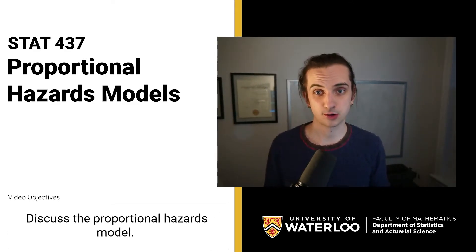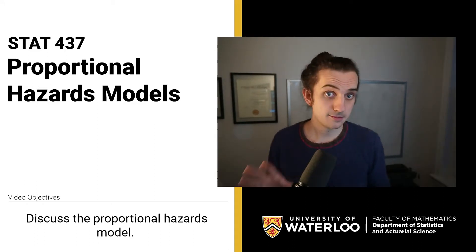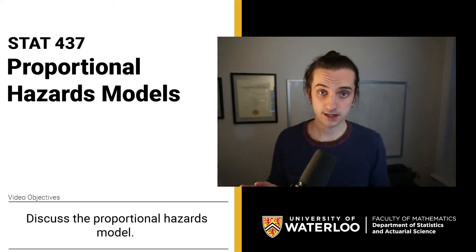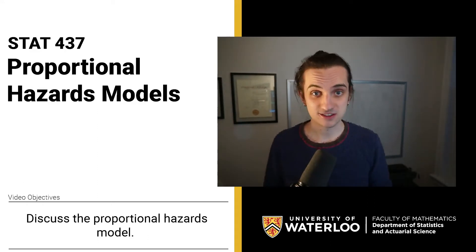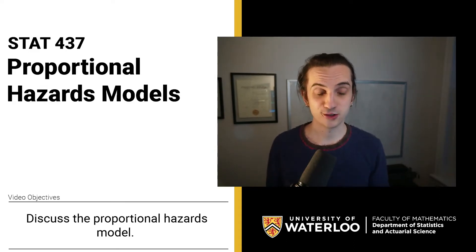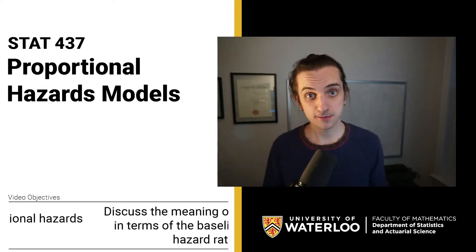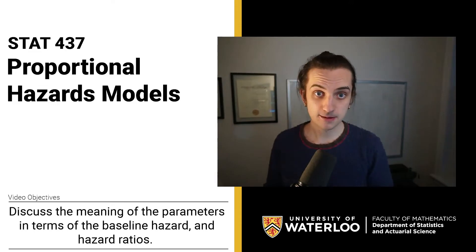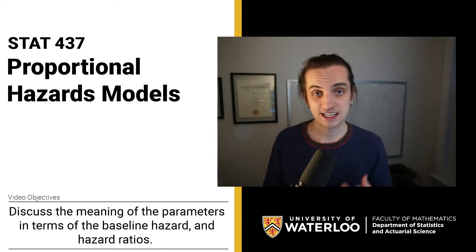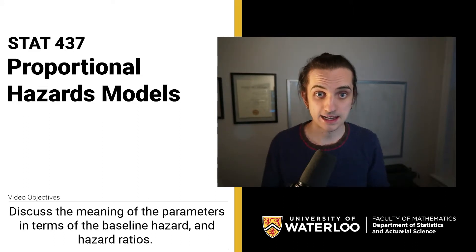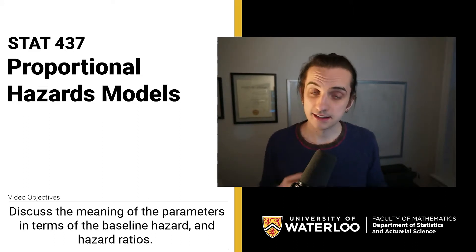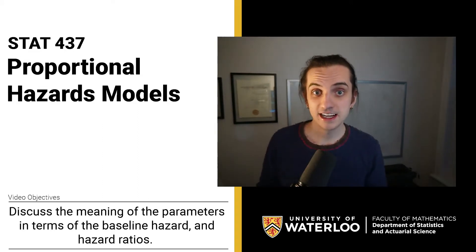So if we can directly model the hazard function, then we can get likelihood inference very naturally. That's the idea with these proportional hazards models. They're the last type of model we're going to be looking at in this course. In this video I'll present everything at a high conceptual level. In the next video we'll talk about some of the theory, and then in the final video we'll actually fit some of these models in R.